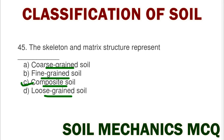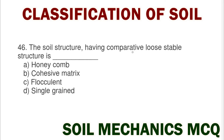Next question: the soil structure having a comparatively loose stable structure is option A honeycomb structure, option B coaggressive matrix structure, option C flocculent, option D single grain. The correct answer is option A honeycomb structure.